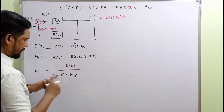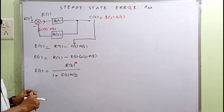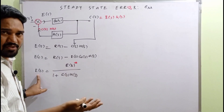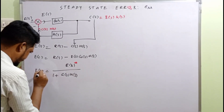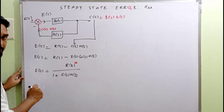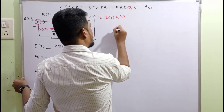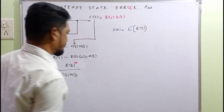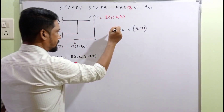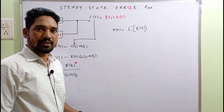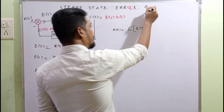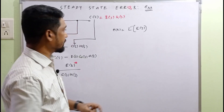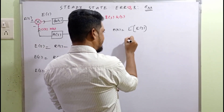Important point: E(s) is the input in the Laplace domain. E(t) is the inverse Laplace transform of E(s), bringing us to the time domain. The definition for steady-state error E_ss is: E_ss = limit as t tends to infinity of e(t).